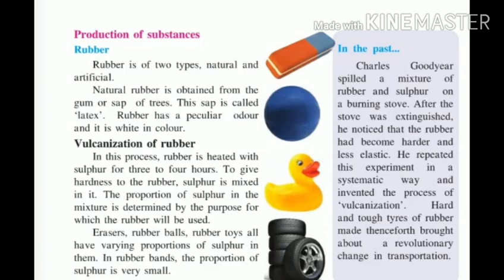Next is the production of substances. Rubber is of two types: natural and artificial. Natural rubber is obtained from the gum or sap of a tree.